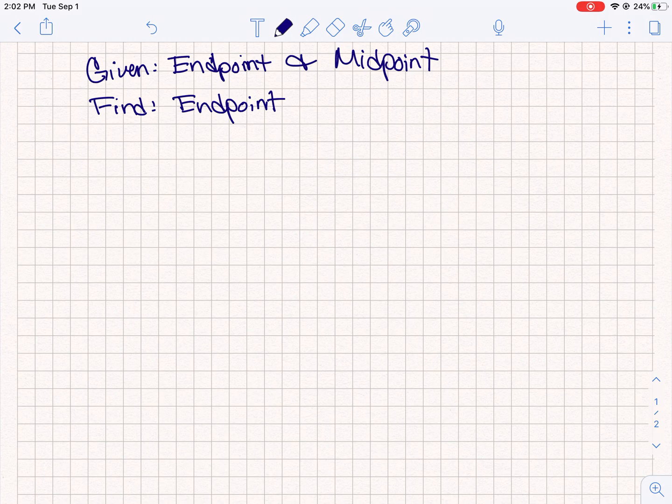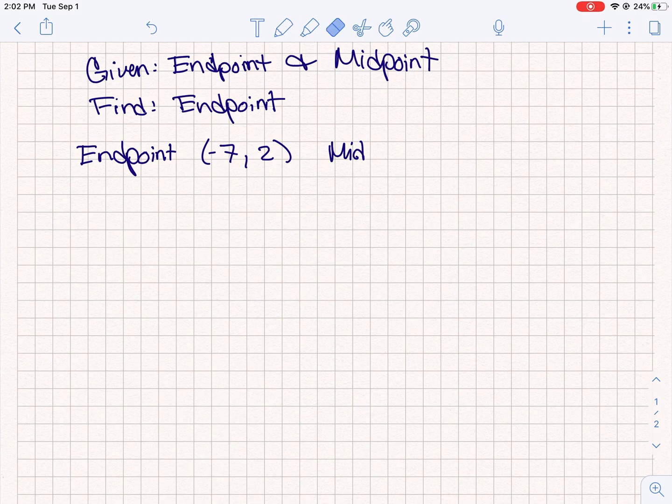So let's say we're given the endpoint (-7, 2), the midpoint (-3, 8), and I want us to find what is that missing endpoint.